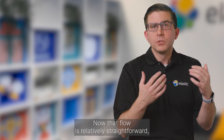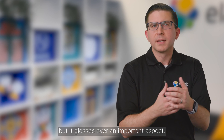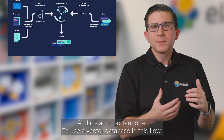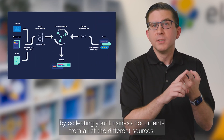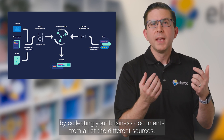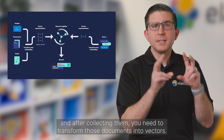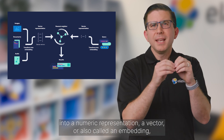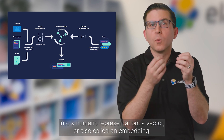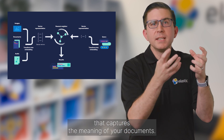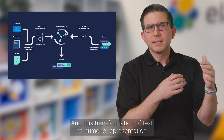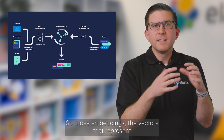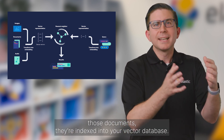Now, that flow is relatively straightforward, but it glosses over an important aspect: how does that vector database portion work? To use a vector database in this flow, you need to start by collecting your business documents from all of the different sources. After collecting them, you need to transform those documents into vectors. This is where a large language model transforms the text of the document into a numeric representation — a vector, also called an embedding — that captures the meaning of your documents. This transformation of text to numeric representation is commonly called generating embeddings. Those embeddings, the vectors that represent those documents, are then indexed into your vector database.